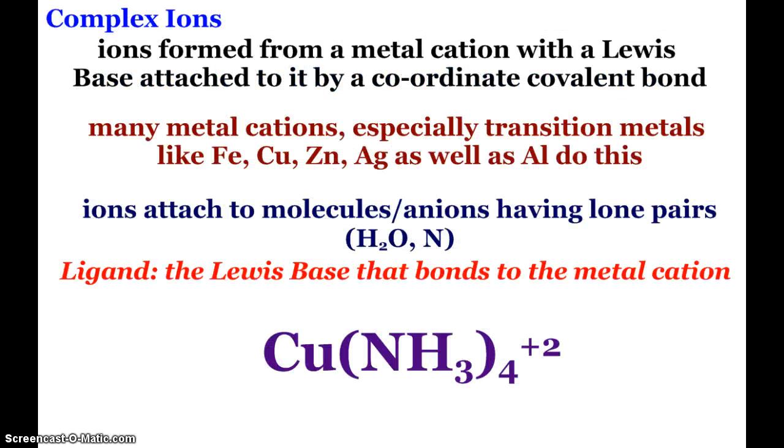So our last topic here are complex ions. Ions formed from a metal cation with a Lewis base attached by a coordinate covalent bond. Now remember we don't really have to know about Lewis acids and bases but they're important to talk about sometimes especially like here. All the Lewis base is doing is donating two electrons, donating electrons, and that's what a coordinate covalent bond is.